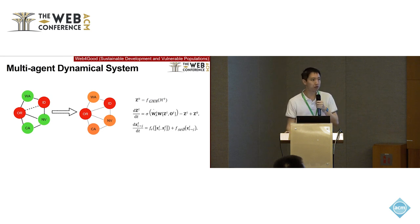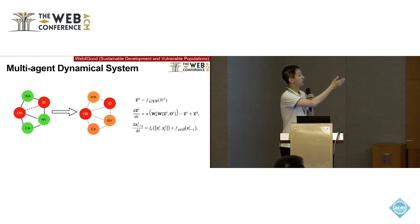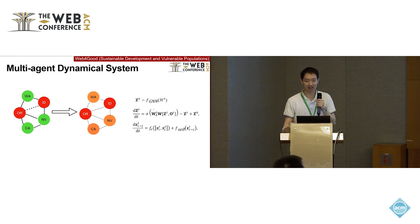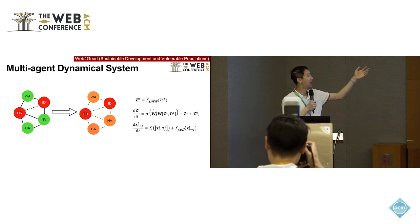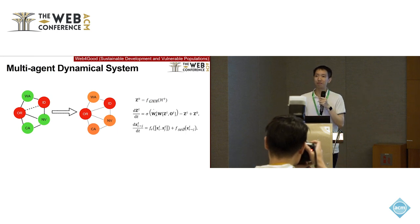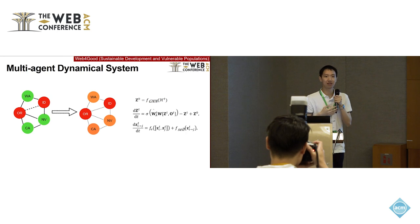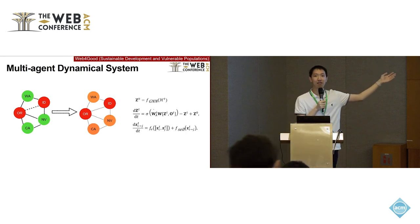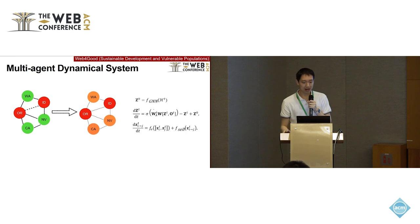We use two graph neural networks. First, an initial graph neural network where HT means the historical data — we use the GNN to encode it to the initial representation Z0. Then we use a graph ODE. ODE models the relationship between the derivative of a variable and a function of that variable, and here we use a graph neural network to model this function. The second GNN predicts the change of Z — the derivative of Z with respect to time.